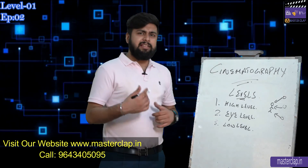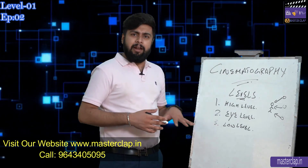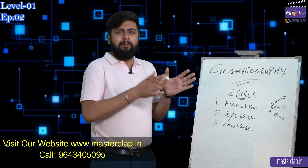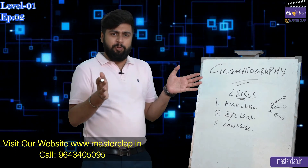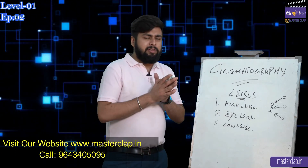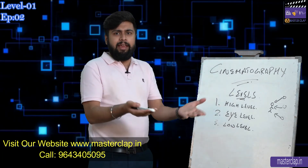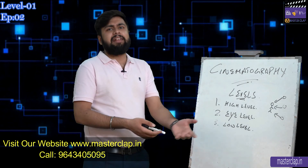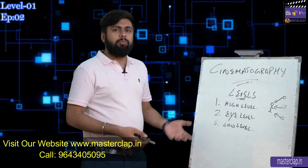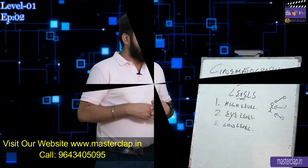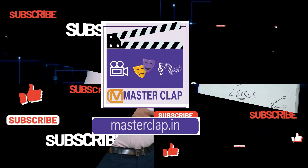So these three things — high level, eye level, and low level — are the most important things to know when you are going to shoot. Because what you want to show matters. If you are not showing it correctly, your knowledge is incomplete. So let's go.